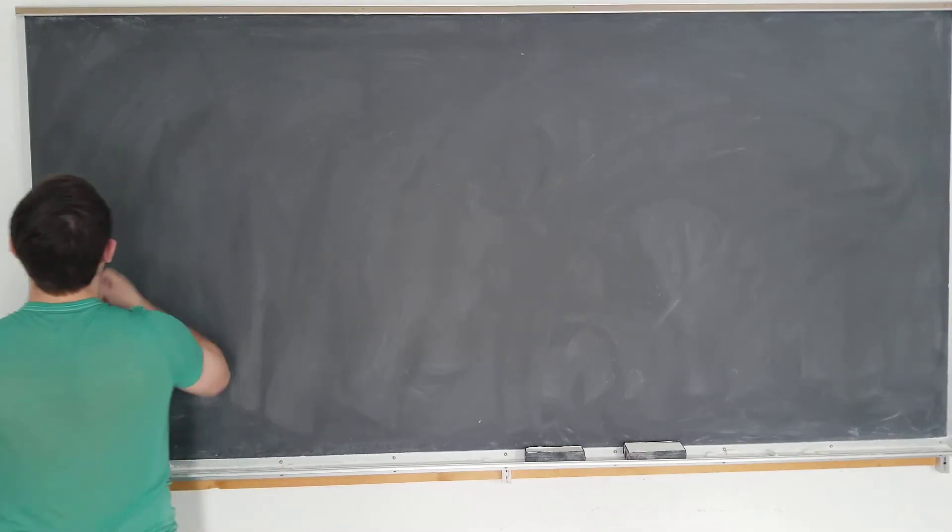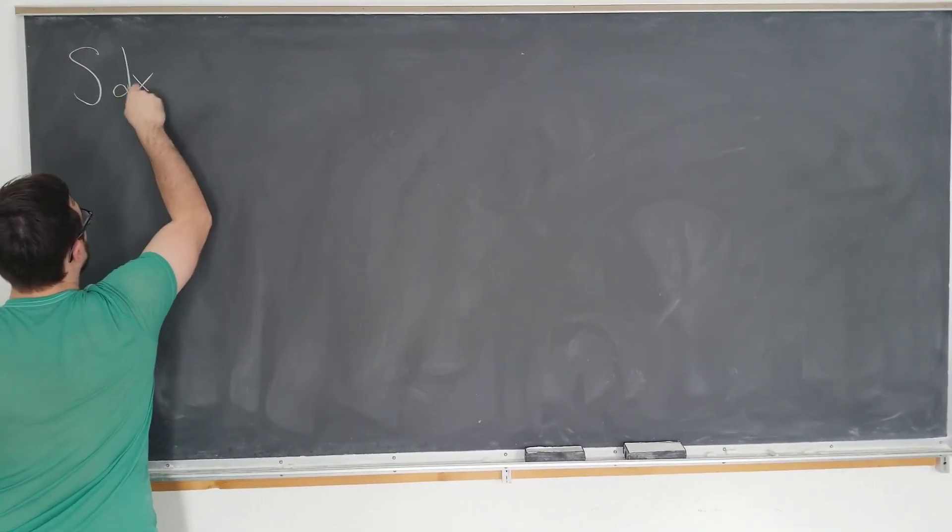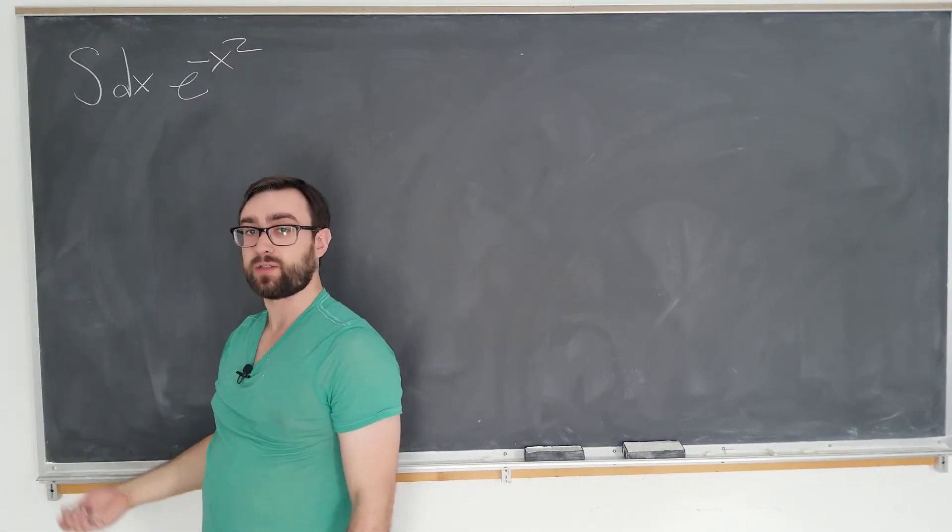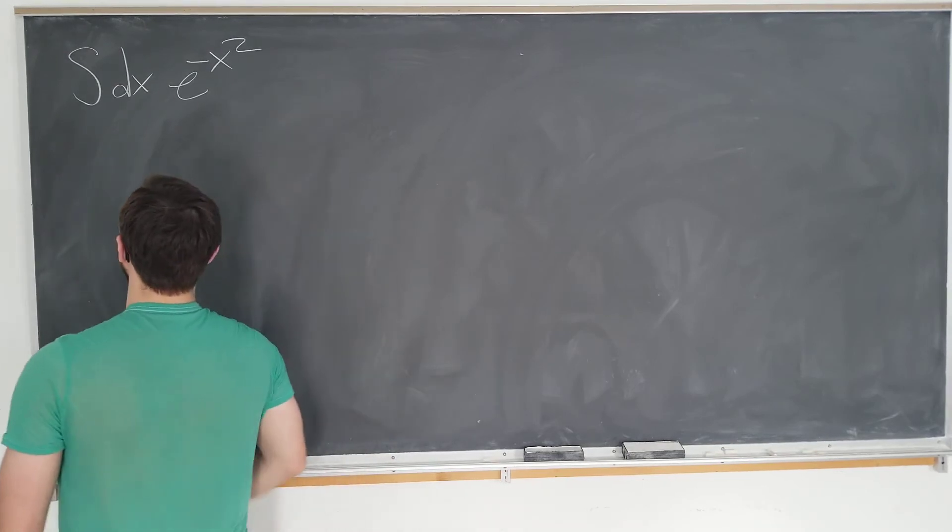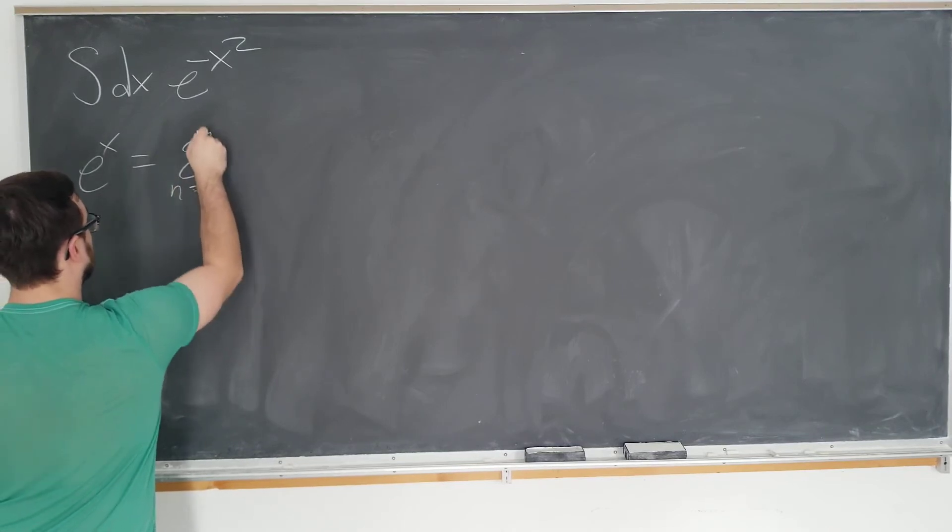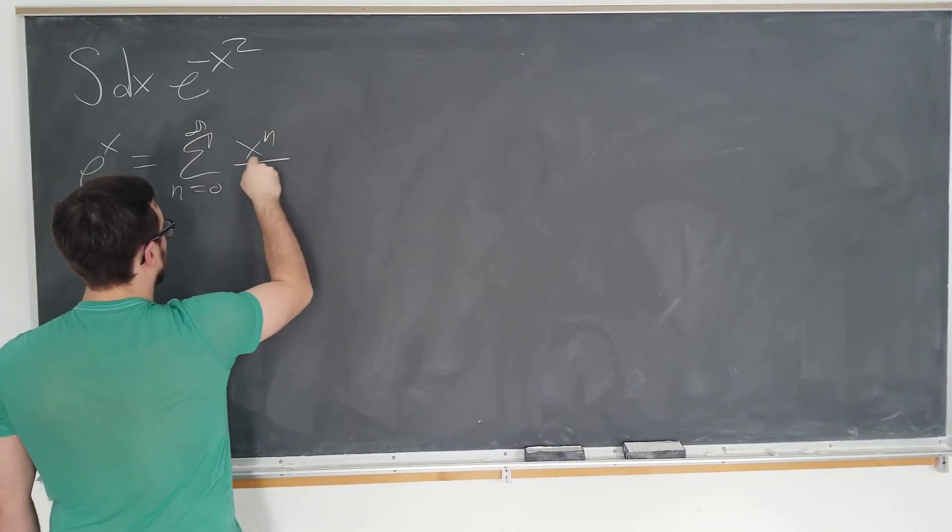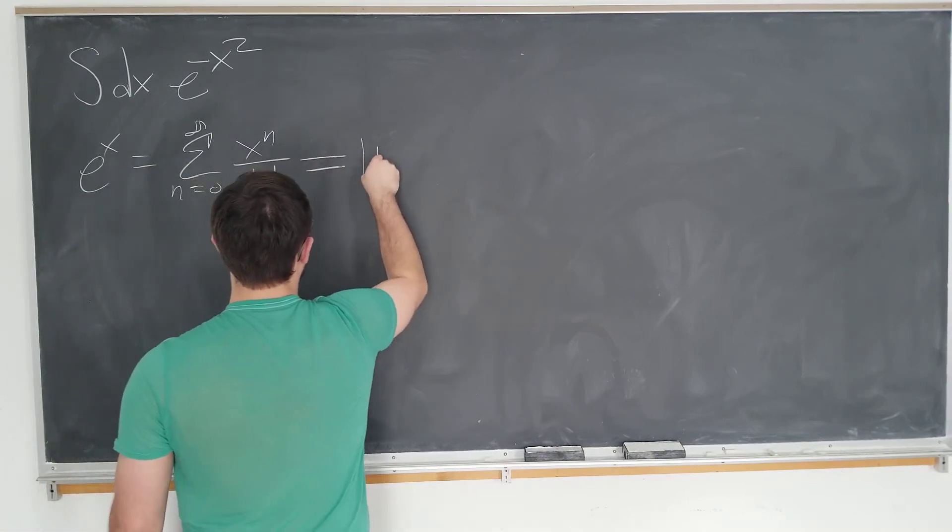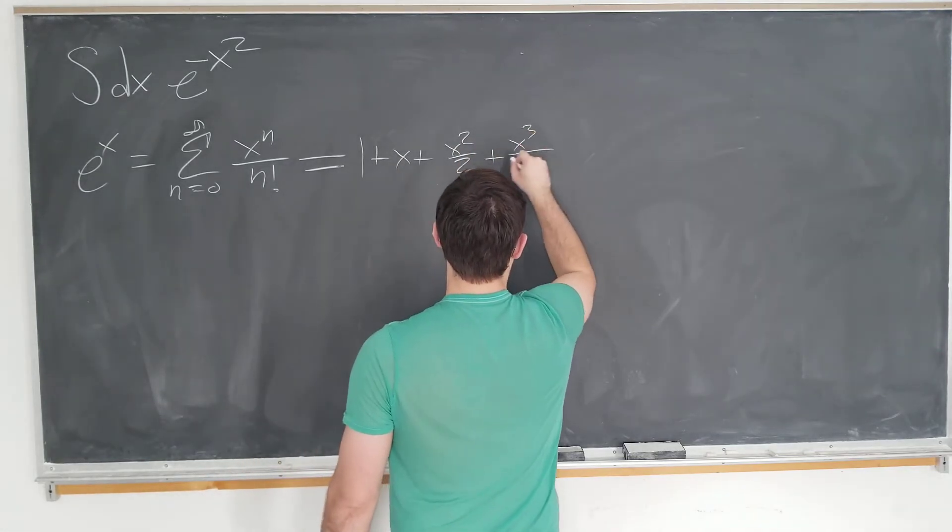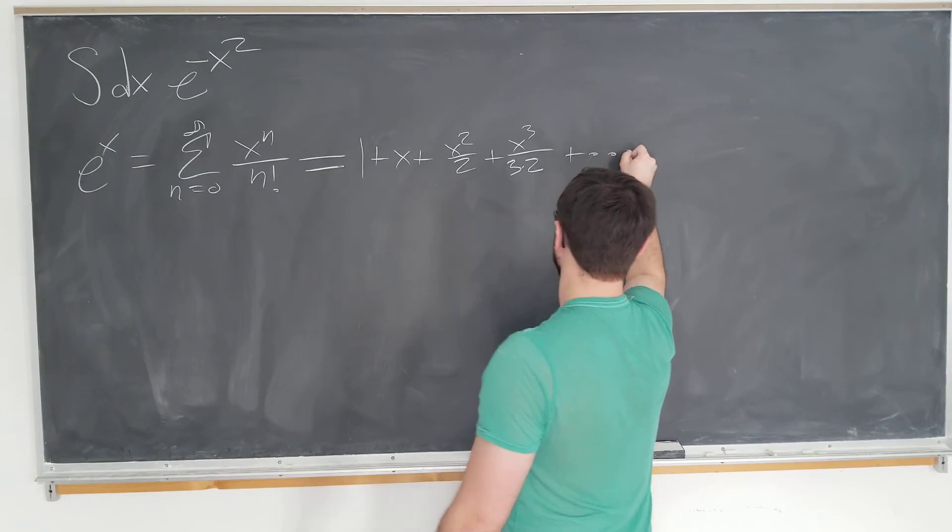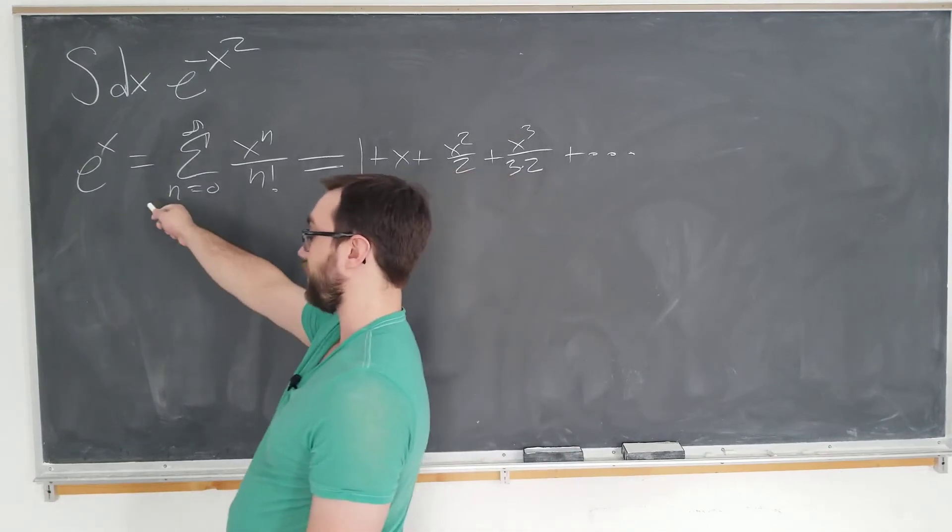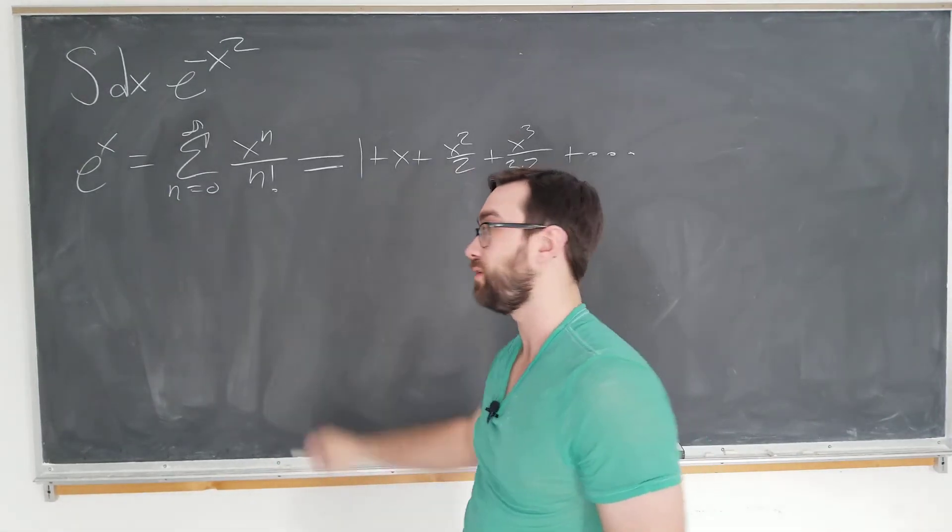We want to know how to evaluate the integral with respect to x of e to the minus x squared. Let's go ahead and write down the Taylor series for the exponential so we can see how we can apply it to the Gaussian. The exponential function has a Taylor series of the sum as n goes from zero to infinity of x to the n over n factorial which we can break down as one plus x plus x squared over two plus x cubed over three times two plus higher order terms. To apply this to e to the minus x squared we just replace x by minus x squared in our power series here. Let's get started on that.